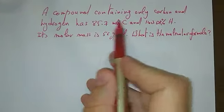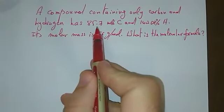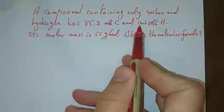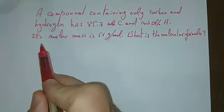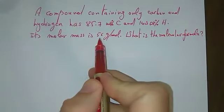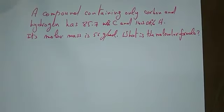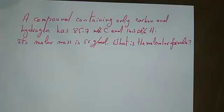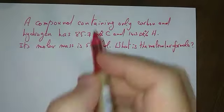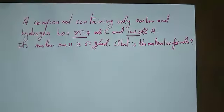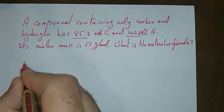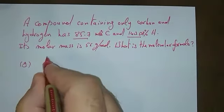A compound containing only carbon and hydrogen has 85.7 percent weight in carbon and 14.3 percent weight of hydrogen. Its molar mass is given as 56 grams per mole. What's the molecular formula of that compound? In this case, we take the percentage directly as grams.